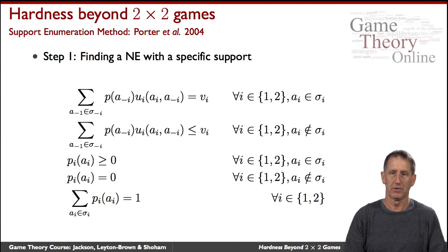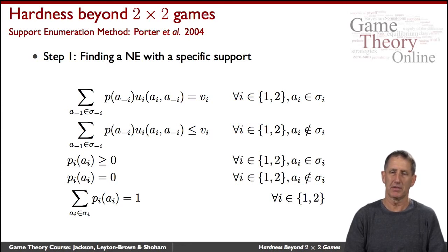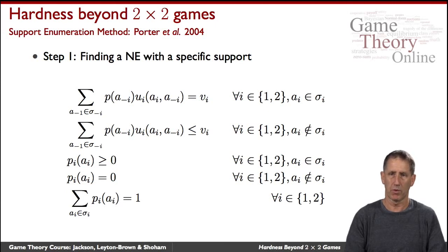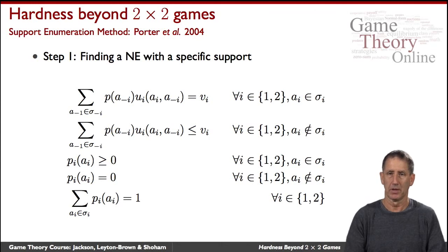Let's now look at a very different procedure — one that doesn't look in as much detail at the structure of equilibria, but compensates by performing heuristic search in a certain way. We'll look at it in two stages. The first step is to note that when you fix the support of a strategy profile, finding out whether there is a Nash equilibrium with that support is an easy problem. Remember that the support of a strategy consists of all the actions to which the player gives non-zero probability in their mixed strategy.